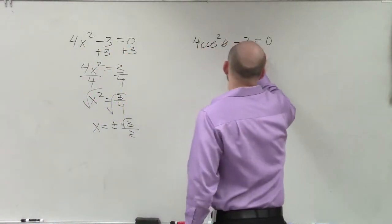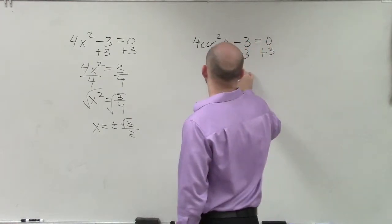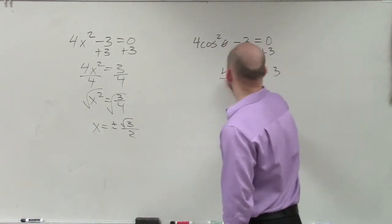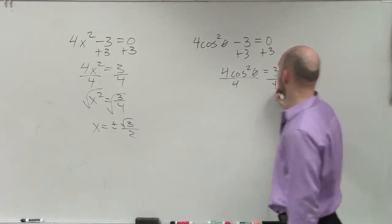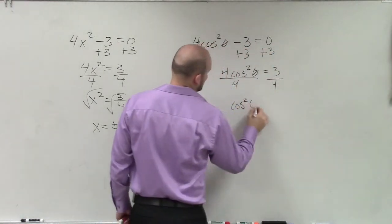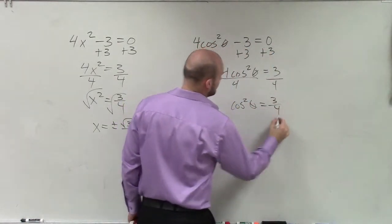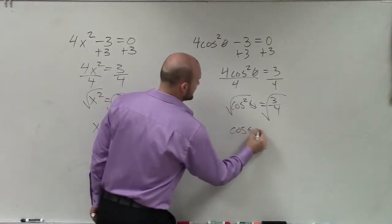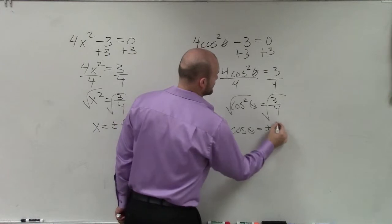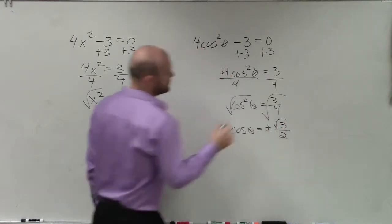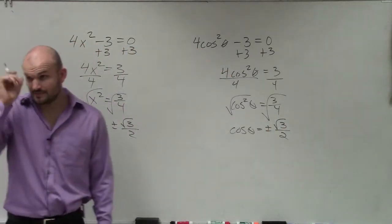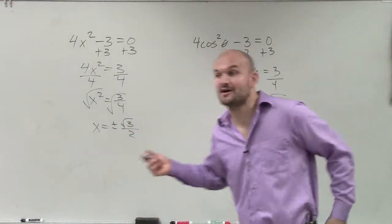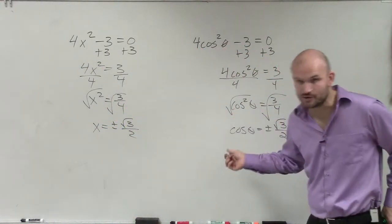So in this case, you add the 3: 4 cosine squared of theta equals 3, divide by 4. Cosine squared of theta equals 3 over 4. Take the square root, and cosine of theta equals plus or minus the square root of 3 over 2. Now that's the easy part — we're not done yet, because we haven't found the values of theta that make that equation true.